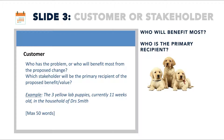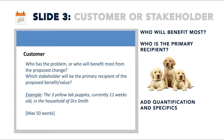In this case, it will be three yellow lab puppies, currently 11 weeks old, in the household of Dr. Smith. Keep this brief but detailed. This statement quantifies and specifies — three yellow lab puppies, 11 weeks old.